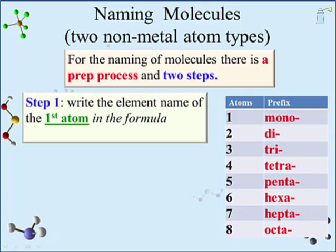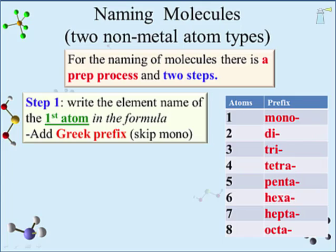Once this is complete, we move into the two steps for compiling the final name. Step 1: write the element name of the first atom in the formula, then add the Greek prefix based on the subscript value as determined in the prep process. To be clear, prefix means putting the term before the atom's name. Also, if the prefix of the first atom is 'mono,' we skip adding that term.